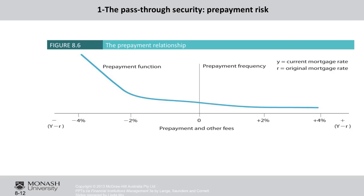Regarding pass-through security and prepayment risk: as you can see in this graph, the prepayment function will increase if the difference between the original interest rate and the current interest rate is positive — meaning the current interest rate is lower than the original. If the current interest is higher than the original, nobody is willing to retire their loans and take new ones at a higher rate. But if the interest rate is now lower than the original, people have a tendency to retire their loans and take new loans at the new low rate.